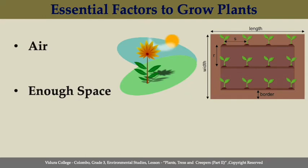Enough space. A plant's roots need space so that they can spread out and absorb water and nutrients. When plants grow too close together, they have to compete for these resources.